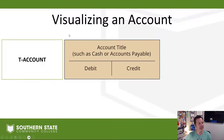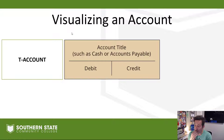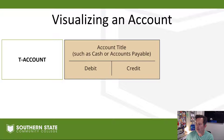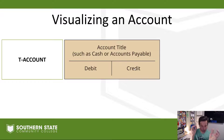To visualize an account, your book talks about something called a T-account. They're called T-accounts because every account can be set up like the letter T. Every account has a left side and a right side — and on my account here, I've got a debit side and a credit side.